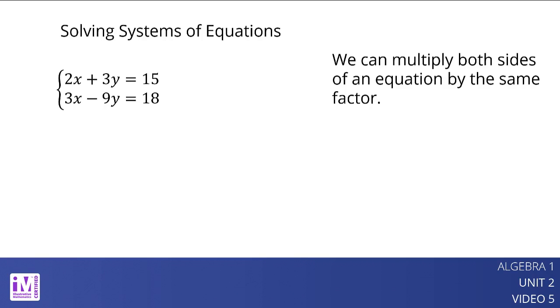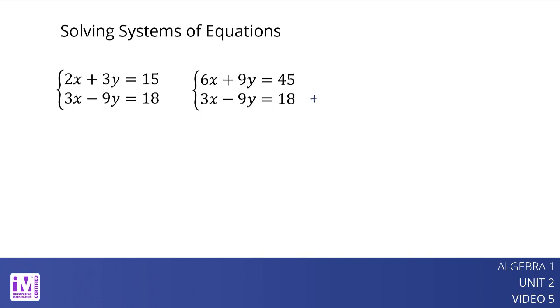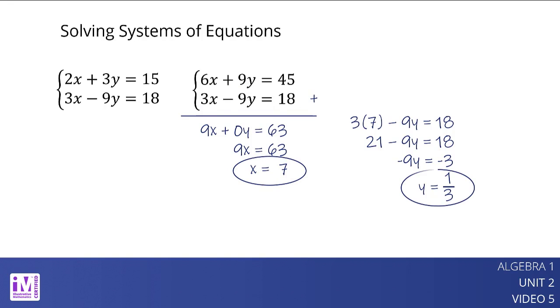There are different ways to eliminate a variable with this approach. Let's try this. Multiply the first equation by 3 to get 6x plus 9y equals 45. Adding this equation to the second equation eliminates y. Substituting 7 for x in the second equation allows us to solve for y. The solution to this system of equations is x equals 7 and y equals 1 third.